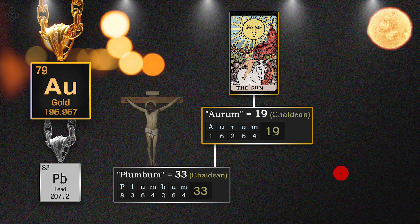And then we get into some tarot to tell us the story, because we think in pictures. It's the 19th card in the tarot — the sun. So I said gold is the sun. Of course it is, it's tied to the sun, which is going to be tied to the number five. There it is, tied to Orym and gold in the sun.